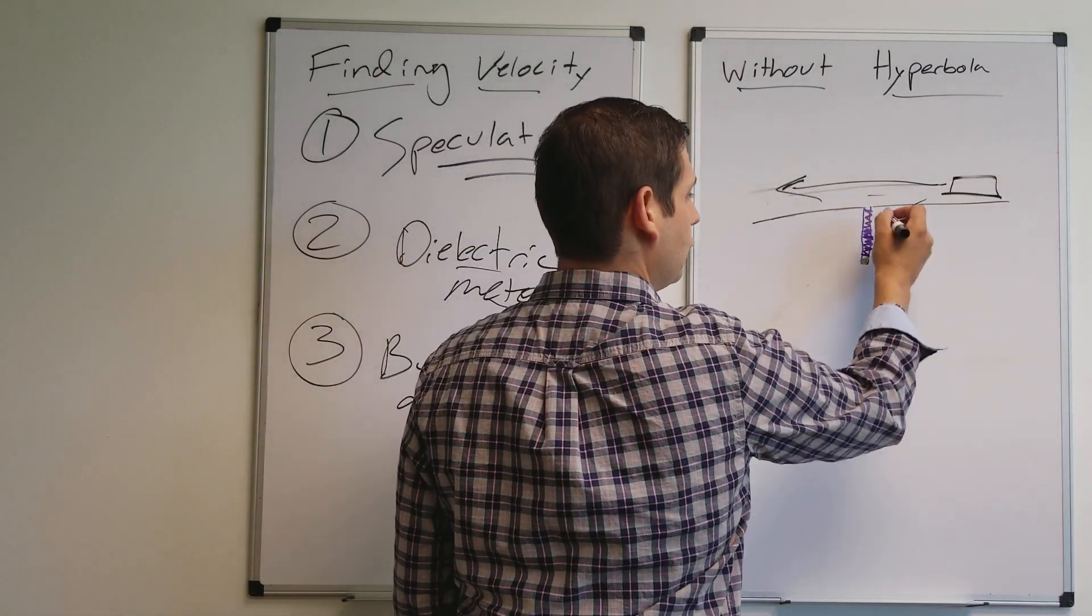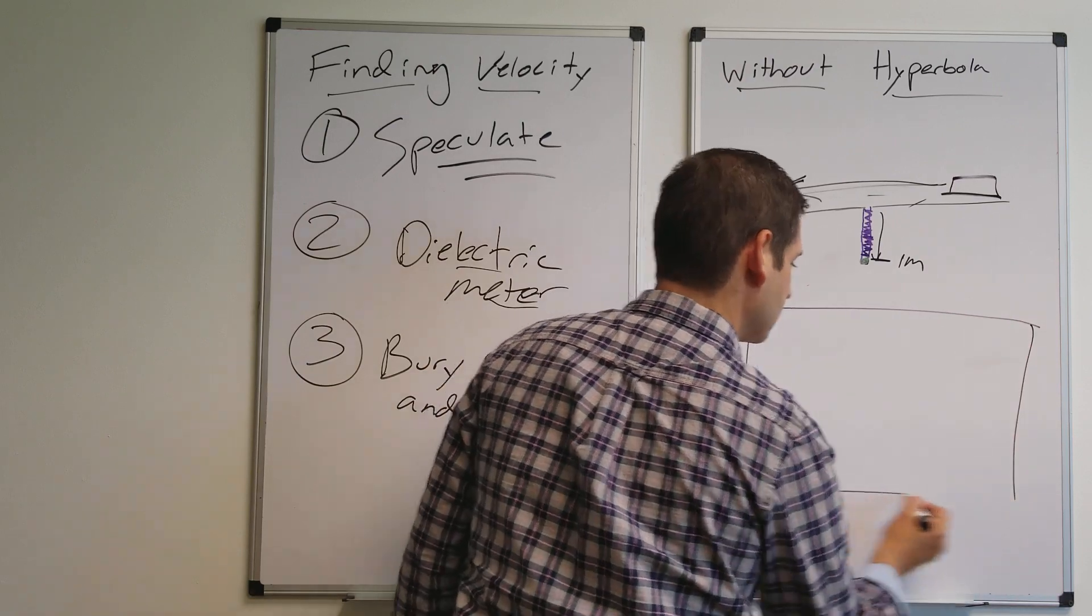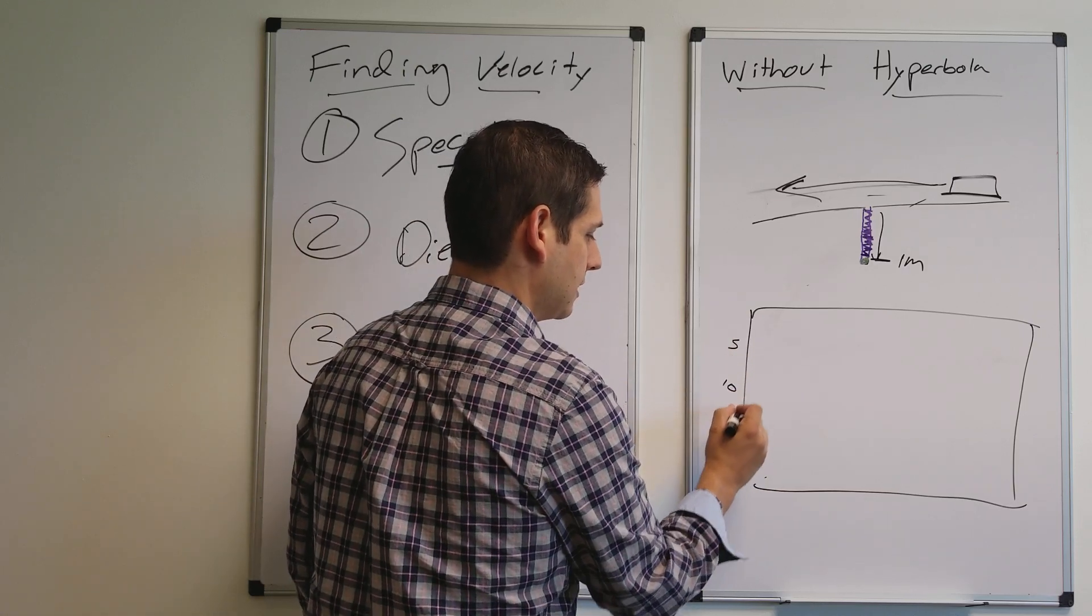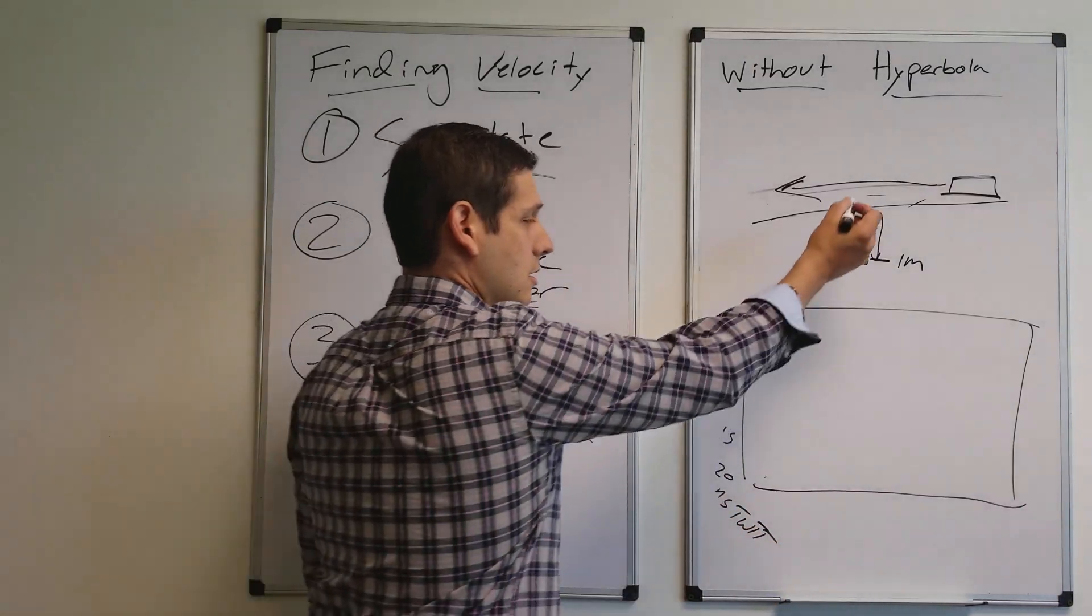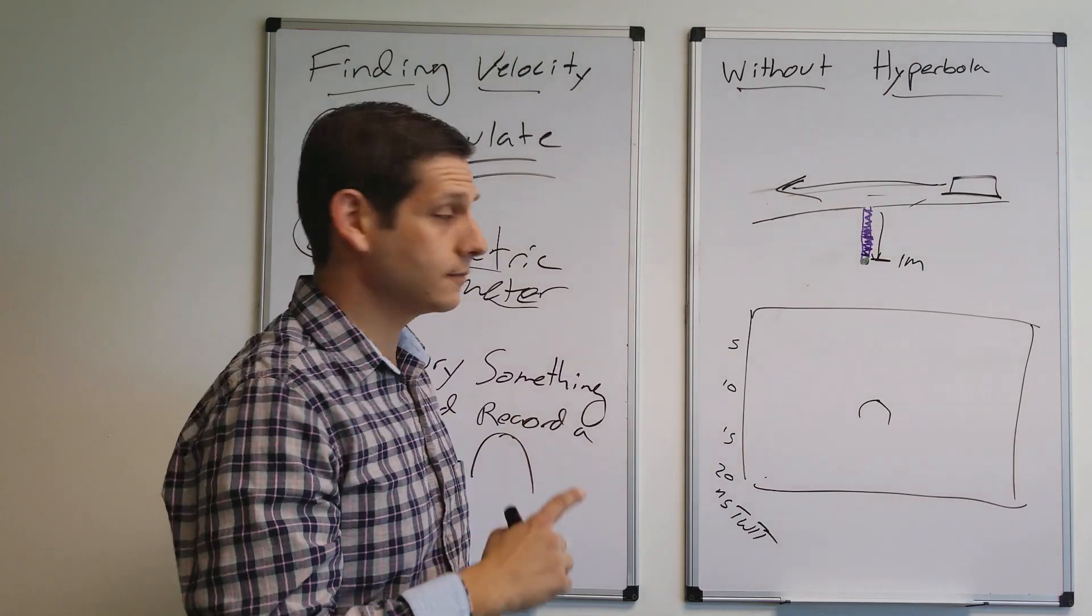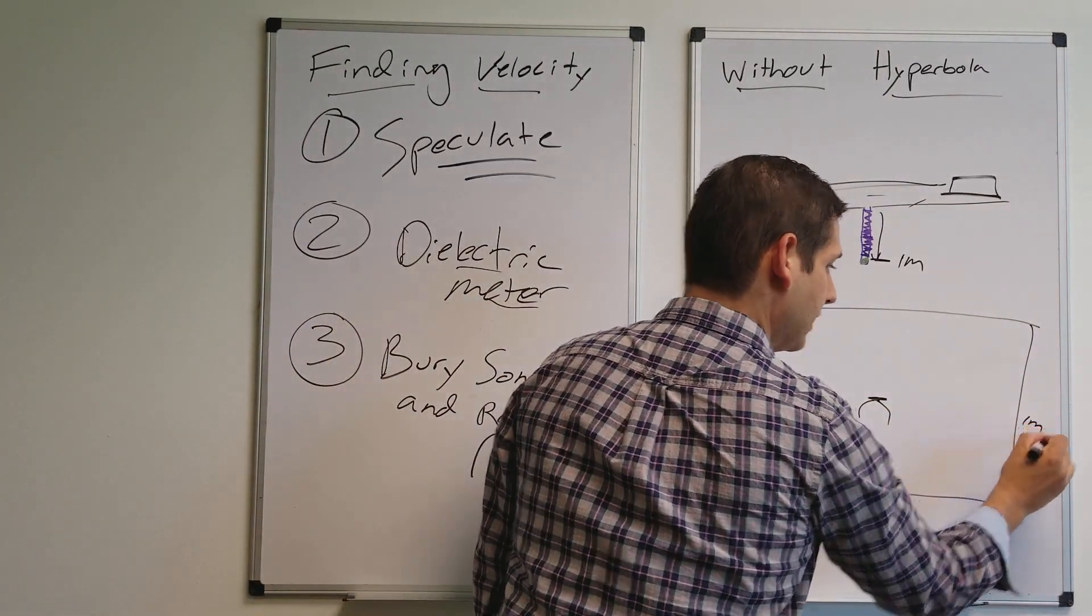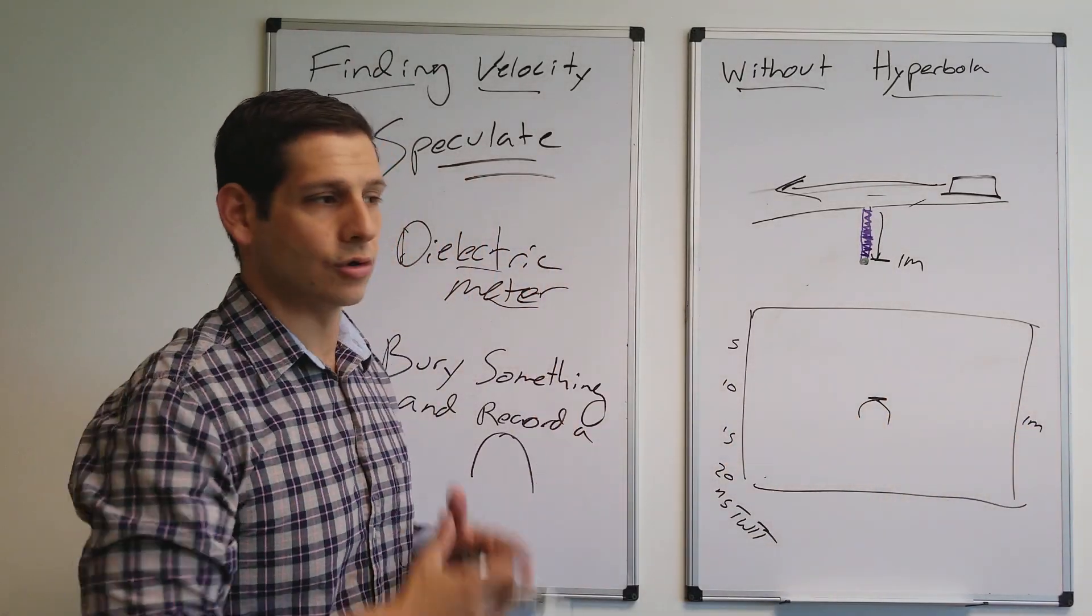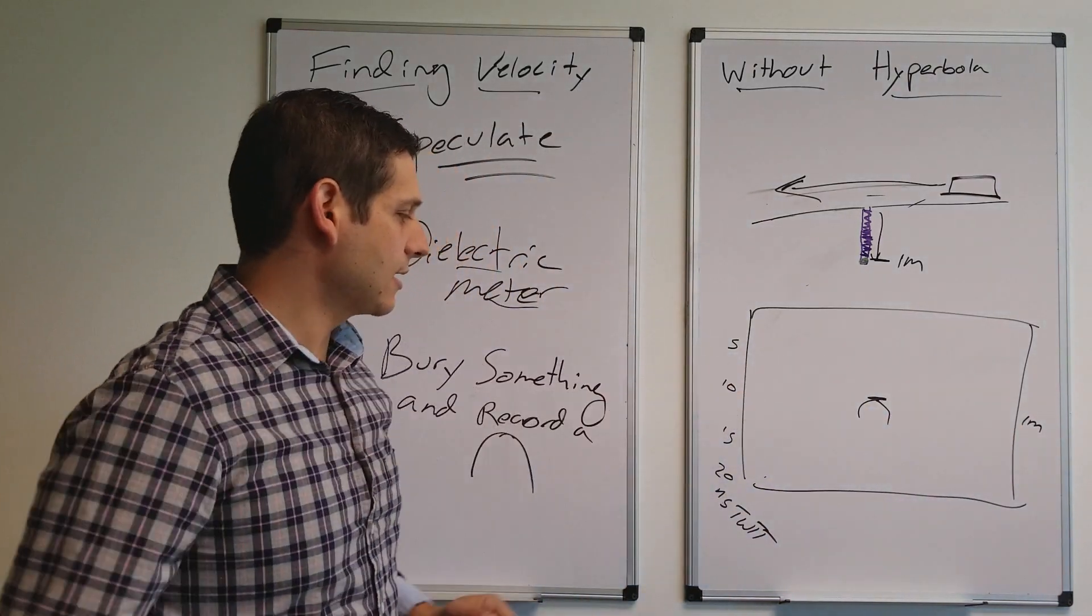I encourage this to be as small as possible because the wider it is, the less accurate your estimates are going to be. The smaller the better, a couple inches ideal. When you do this and you have something buried at the bottom, change the color for this buried object, then you push this over. Now if you know that this is one meter, you push this over, then in your profile, you're going to have 5, 10, 15, 20 nanoseconds in two-way travel time.